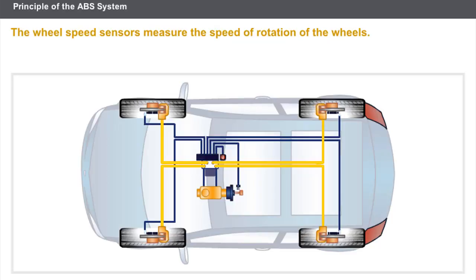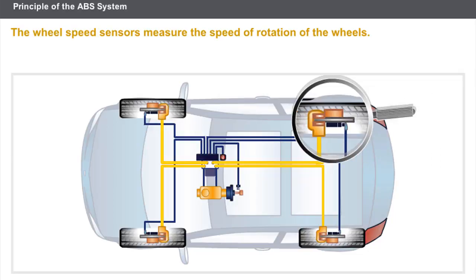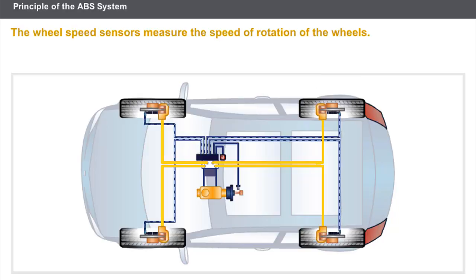The wheel speed sensors measure the speed of rotation of the wheels. The rotating targets generate signals that are read by the sensors. The sensors send these signals to the ABS computer. A rapid drop in speed indicates the start of a wheel locking.